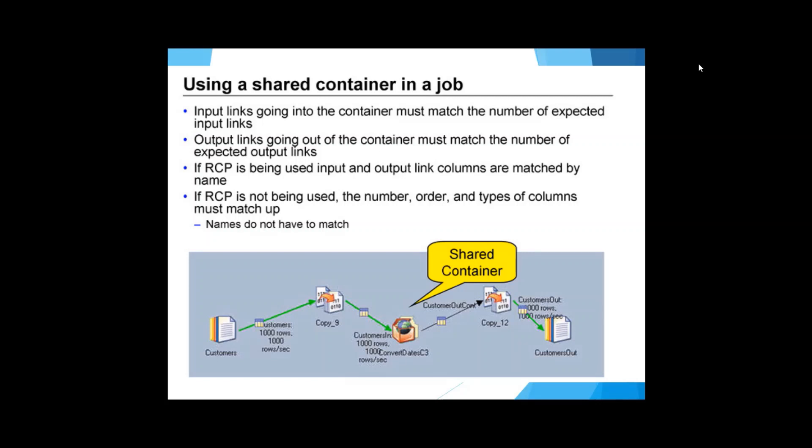You can just pass on the other columns as it is to the output. In case you're using RCP, then the number of input columns and output columns are matched by names. But if you're not using RCP, then it is not mandatory to have common names. They are just matched by the number, the order, and the types of columns.